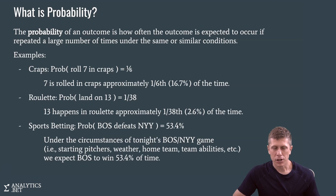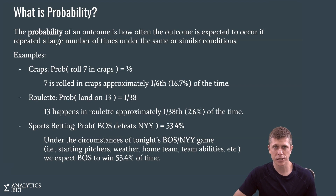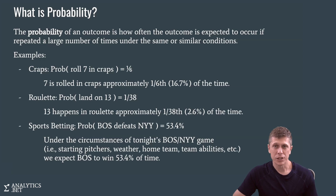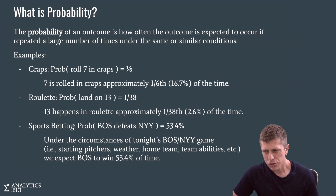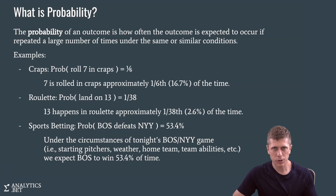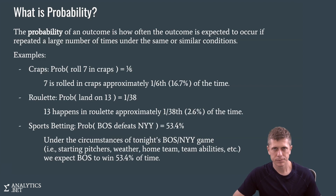In roulette — American roulette in particular, where there's a 0 and a double 0 — there are 38 numbers on the wheel. What's the chance the ball lands on 13? With 38 numbers each equally likely, we expect that in a large number of spins, about one-thirty-eighth, or about 2.6% of the time, we'll see the number 13. Those are probabilities as they occur in repeatable games of chance — coin tosses, dice rolls, spins of wheels.